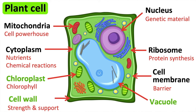Chloroplasts are organelles that contain green pigment. The green pigment is called chlorophyll. Chlorophyll absorbs light energy for photosynthesis. It also contains enzymes required for photosynthesis to take place.